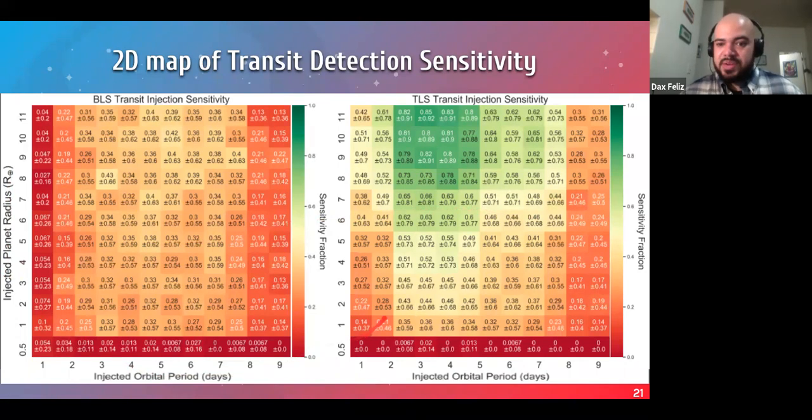So for large short period planets, we're able to recover about half of them for most of the parameter space that we explored using TLS. But for BLS, it's closer to 30 to 40%. Where for really large planets in the two to five day range for TLS, we're recovering 70 to 90% almost. So this is why even though TLS is more computationally expensive to produce, it's worthwhile to use instead of BLS.